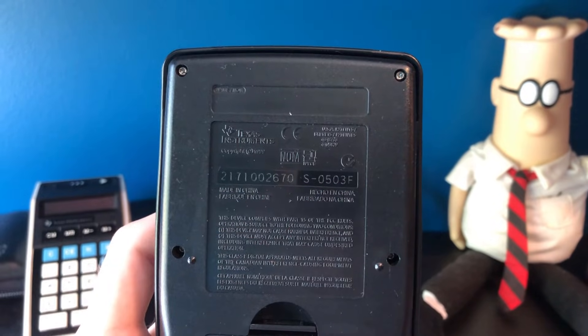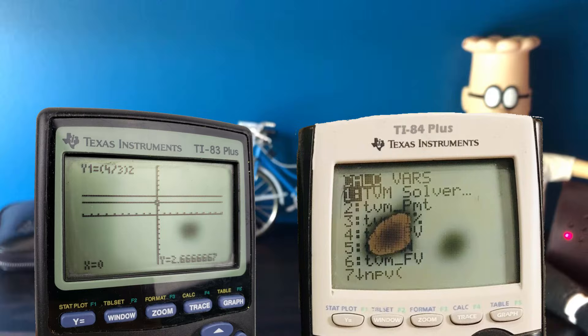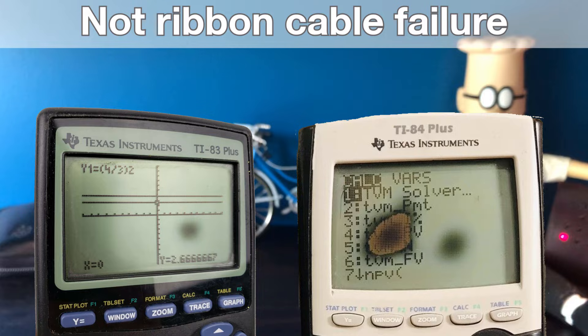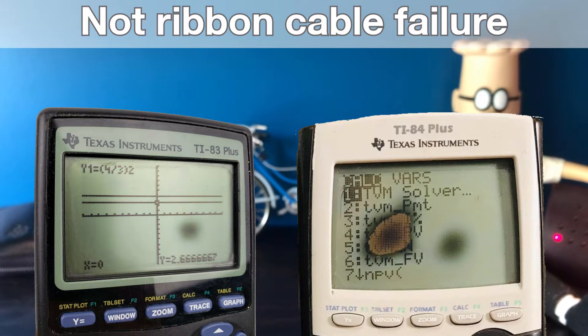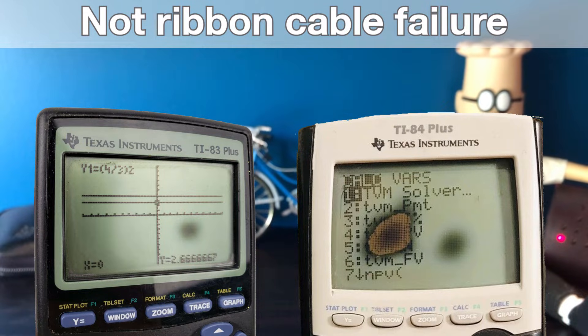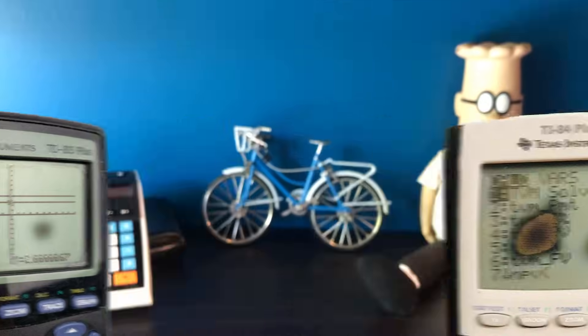I should note that black splotches on the screen are not a sign of ribbon cable failure. Those spots are from pressure point damage. While they can be an annoyance and are also impossible to repair, they do not get worse on their own.